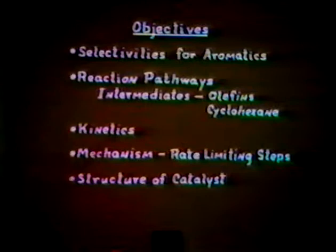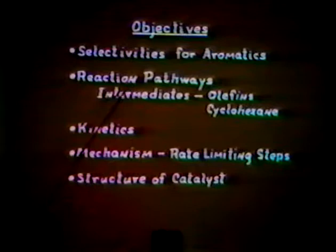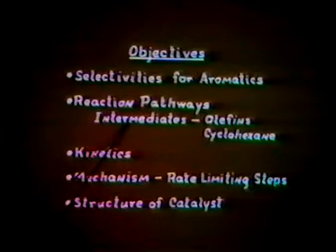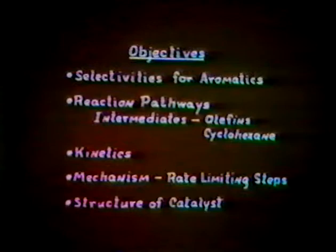The objectives of this work were to look at the selectivities for converting normal paraffins, C6 and larger, into aromatics. We wanted to investigate the reaction pathways, and one of the questions we had was: are intermediates in the formation of the aromatics olefins, or perhaps cyclohexane? We'll also take a look at the kinetics, perhaps a bit about the mechanism and the rate-limiting step, and finally a bit about the structure of the catalyst.